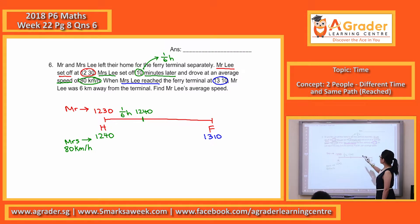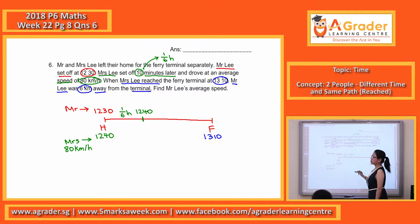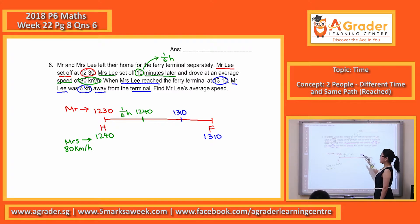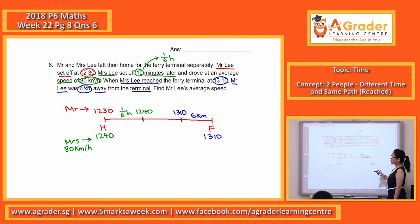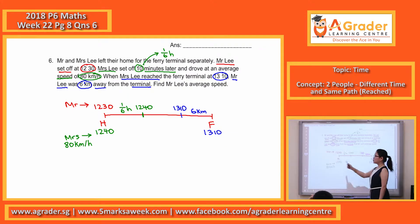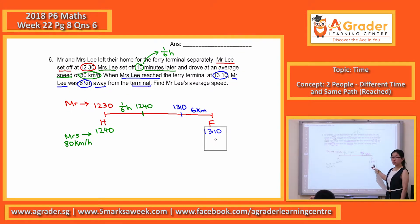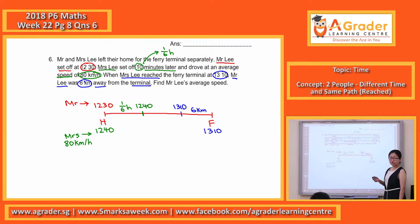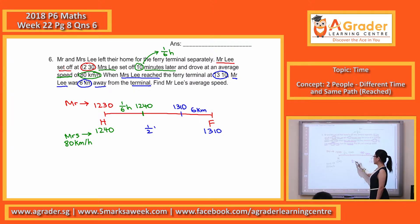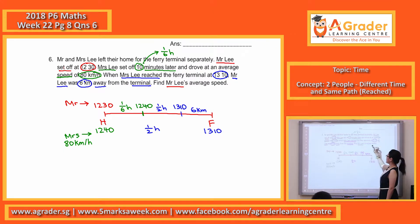At 13:10, Mr. Lee is 6km away from the terminal. So before I move on, from 12:40 to 13:10 — what's the duration? 30 minutes, which is half an hour. So half an hour here. You are supposed to find Mr. Lee's speed.